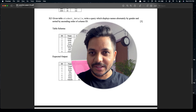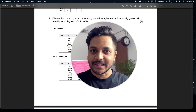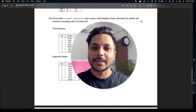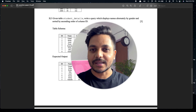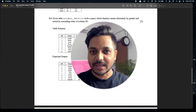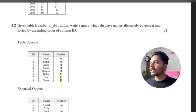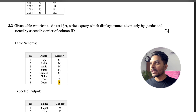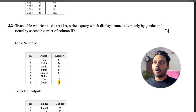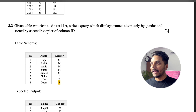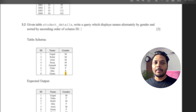Hi everyone, welcome to my another day challenge. Today is day 3 and we will be solving an SQL question asked in an Amazon data analyst interview. The question says: given a table of student details, write a query to display names alternately by gender and sort by ascending order of the id column.